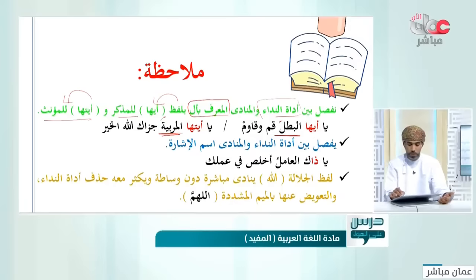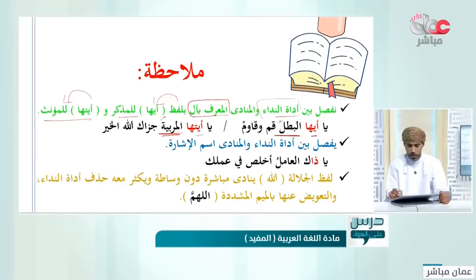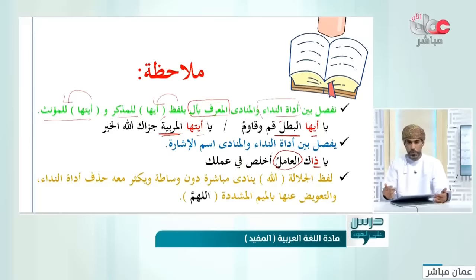المنادى هنا 'المربية' والمنادى هناك 'البطل'، وتوصلنا لنداء المعرف بأل بـ'أيها' للمذكر و'أيتها' للمؤنث. أيضاً يمكن أن يفصل بين أداة النداء والمنادى اسم إشارة. مثاله: يا ذاك العامل، والمنادى هنا 'العامل'.